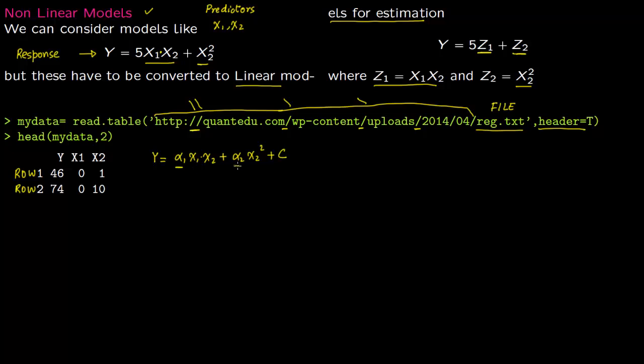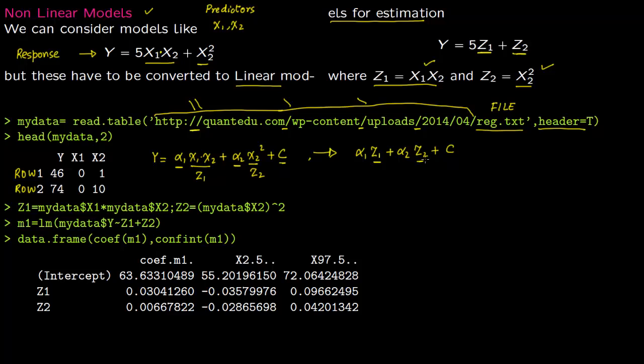So given this data set, we want to find out a model like this. So we want to find alpha 1, alpha 2, and a constant. First step is you make it into a linear model. So this Z1 is X1 times X2, Z2 is X2 squared. This is Z1 and this is Z2.